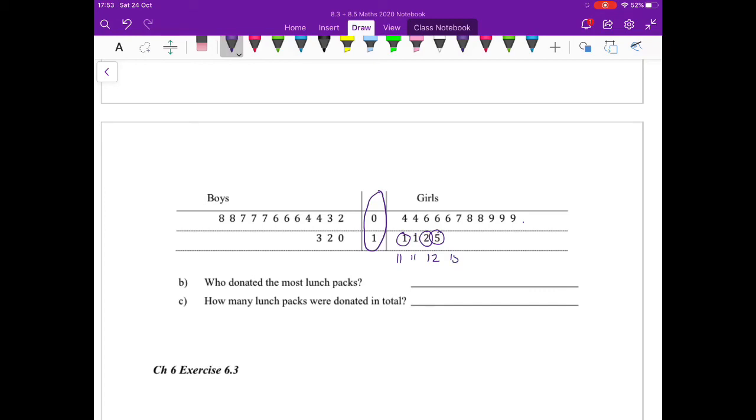This value is 12 and this value is 15. So if I add all of those together, the girls donated 125 lunch packs and the boys donated 103 lunch packs. If I add them together, that gives me a total of 228. The girls donated the most at 125.